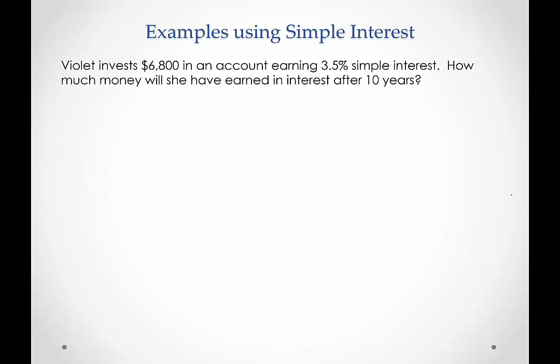Let's look at some examples. Violet invests $6,800 in an account earning 3.5% simple interest. How much money will she have earned in interest after 10 years? So writing down the information, she invests $6,800. So we would say the present value is $6,800.